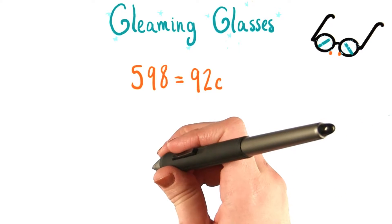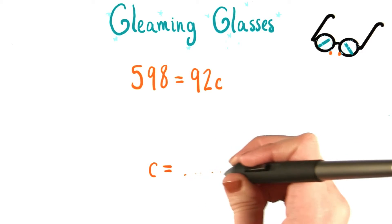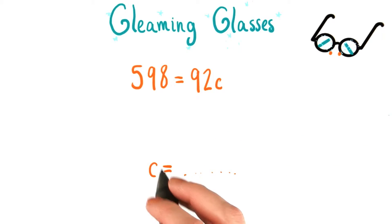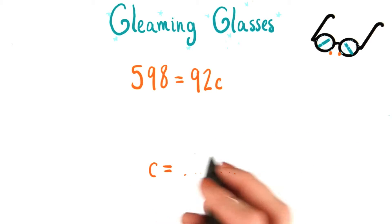We know that we want our final equation to look like c equals something, so that means we need to isolate c, as mathematicians like to say.